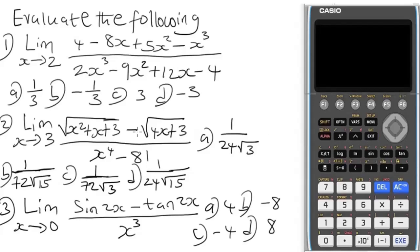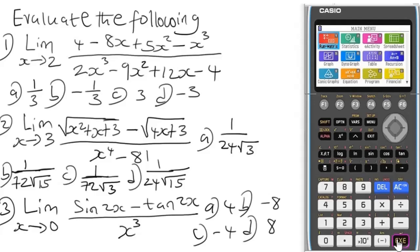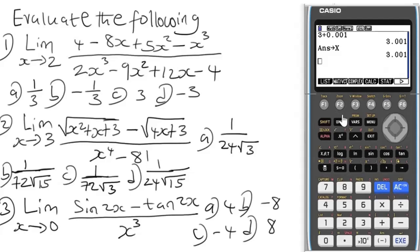For Question 2, the limit is x tending to 3. Go to Run-Matrix. We calculate 3 + 0.001 and press EXE. Then store this as x: press the arrow button, then Alpha x. EXE confirms it has been stored as x. Now delete everything.